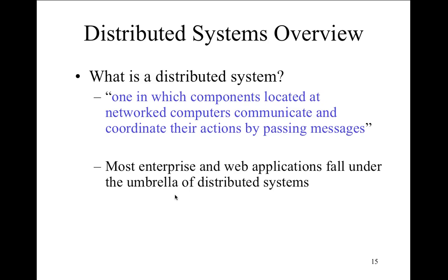Distributed systems by definition: one in which components are located at networked computers and they communicate and coordinate their activities by passing messages. The more modern definition involves distributing work — for example, five servers connected together servicing twenty clients, where one user can borrow processing power from another server for number crunching. We're distributing processing power among different computers and servicing multiple clients simultaneously. That's truly a distributed environment.